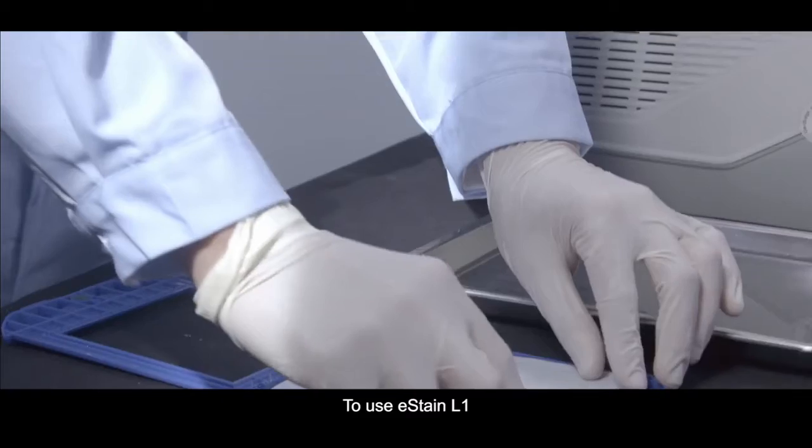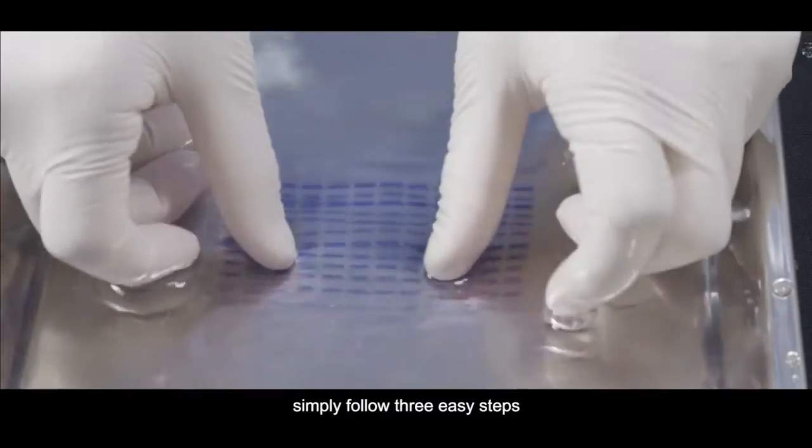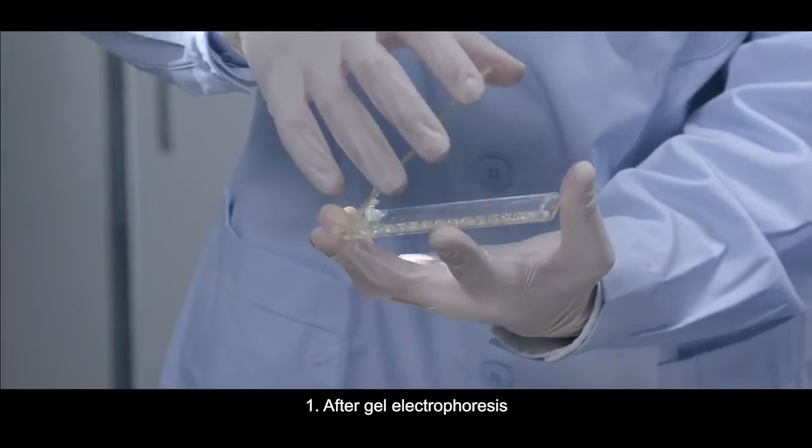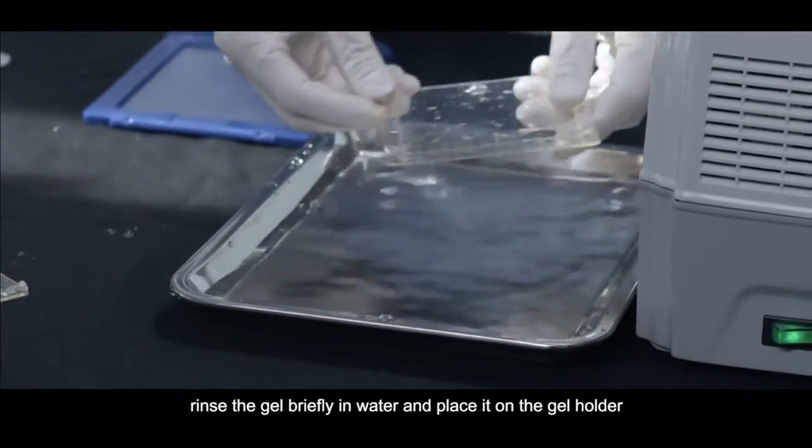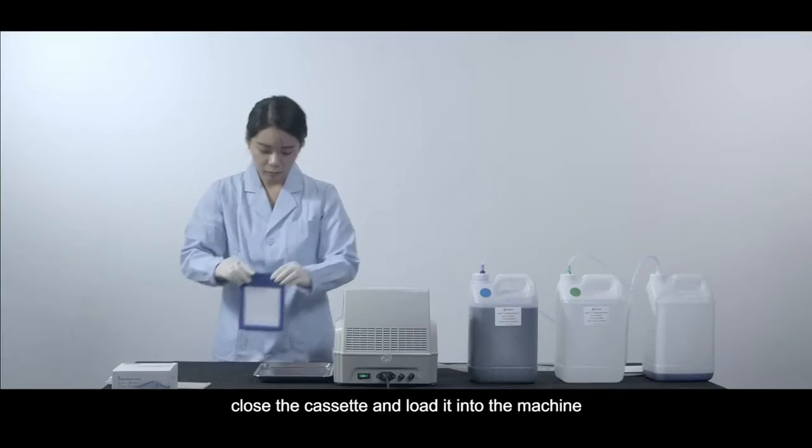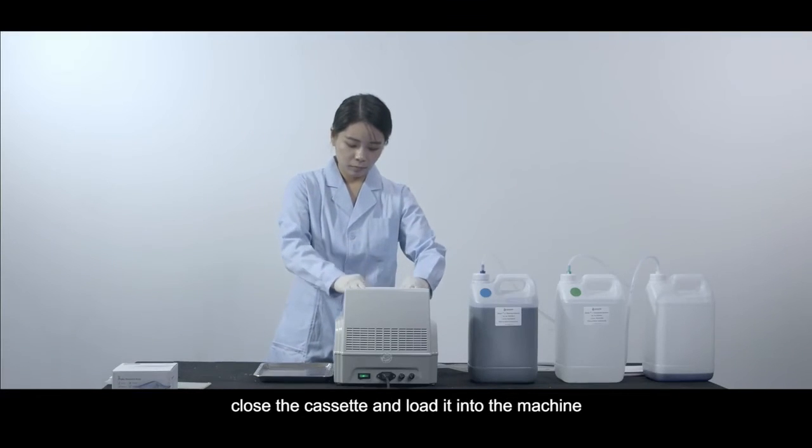To use eStain L1, simply follow three easy steps. First, after gel electrophoresis, rinse the gel briefly in water and place it on the gel holder. Add a pre-wet filter paper onto the gel, close the cassette and load it into the machine.